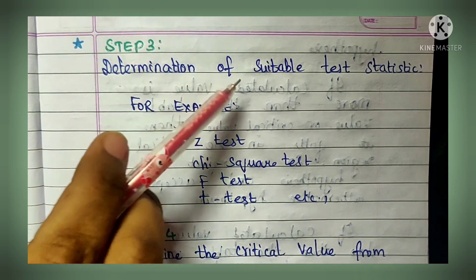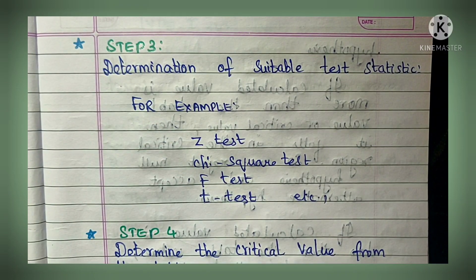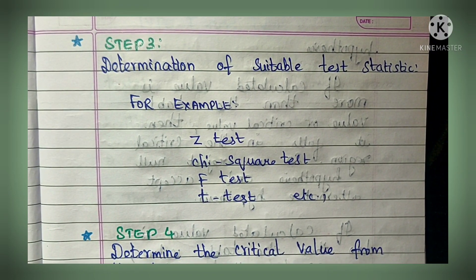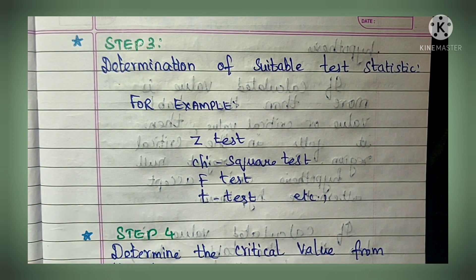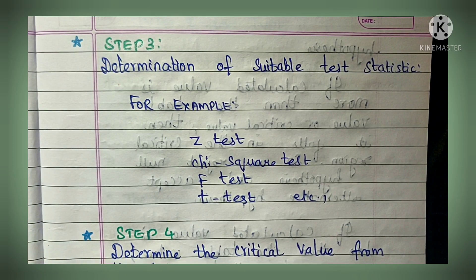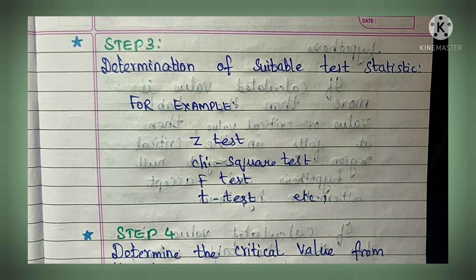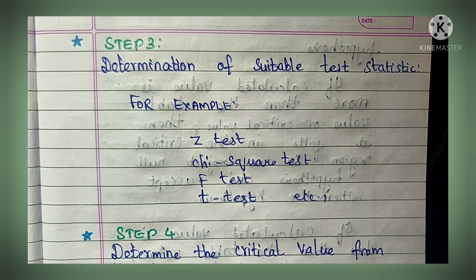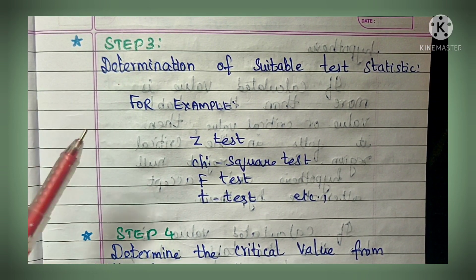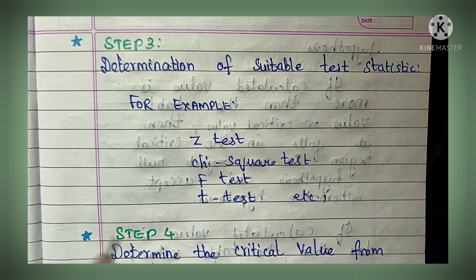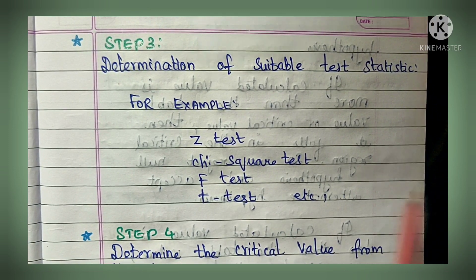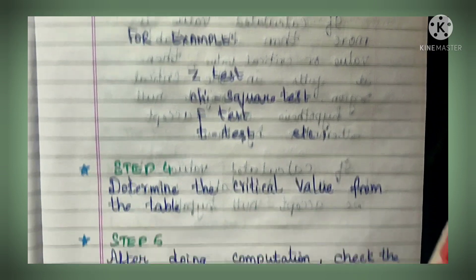Step three - determine a suitable test statistic. We have discussed various parametric and non-parametric tests in our channel - z-test, chi-square test, f-test, t-test, etc. Based on your data, you select an appropriate test: z-test, t-test, ANOVA, chi-square test, and so on.